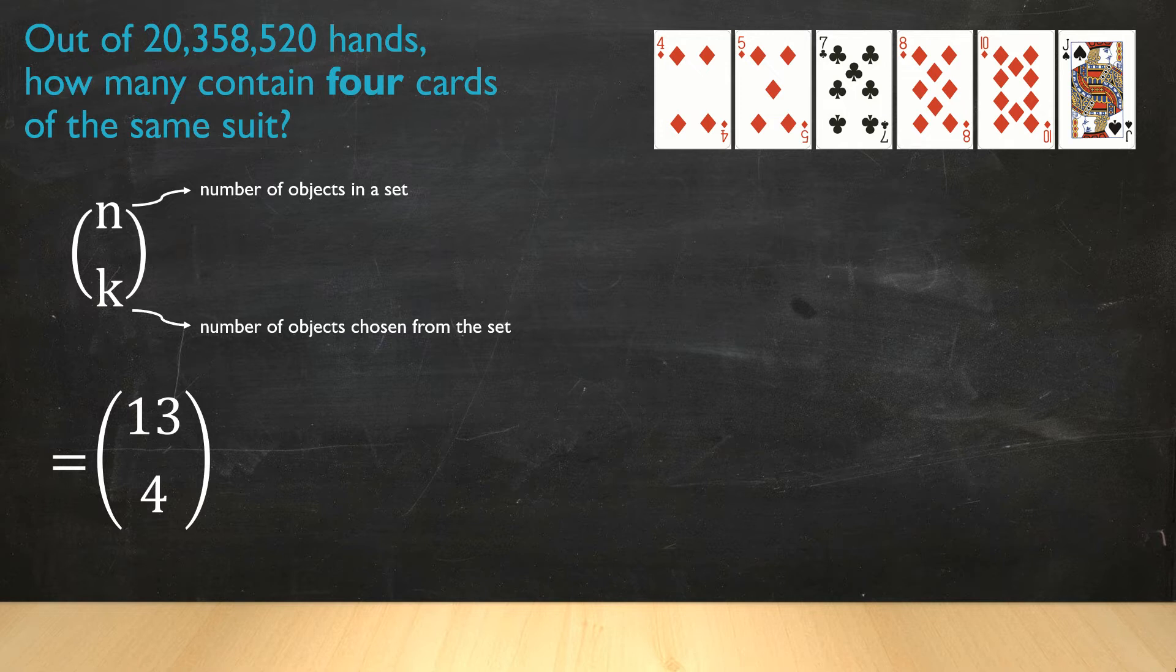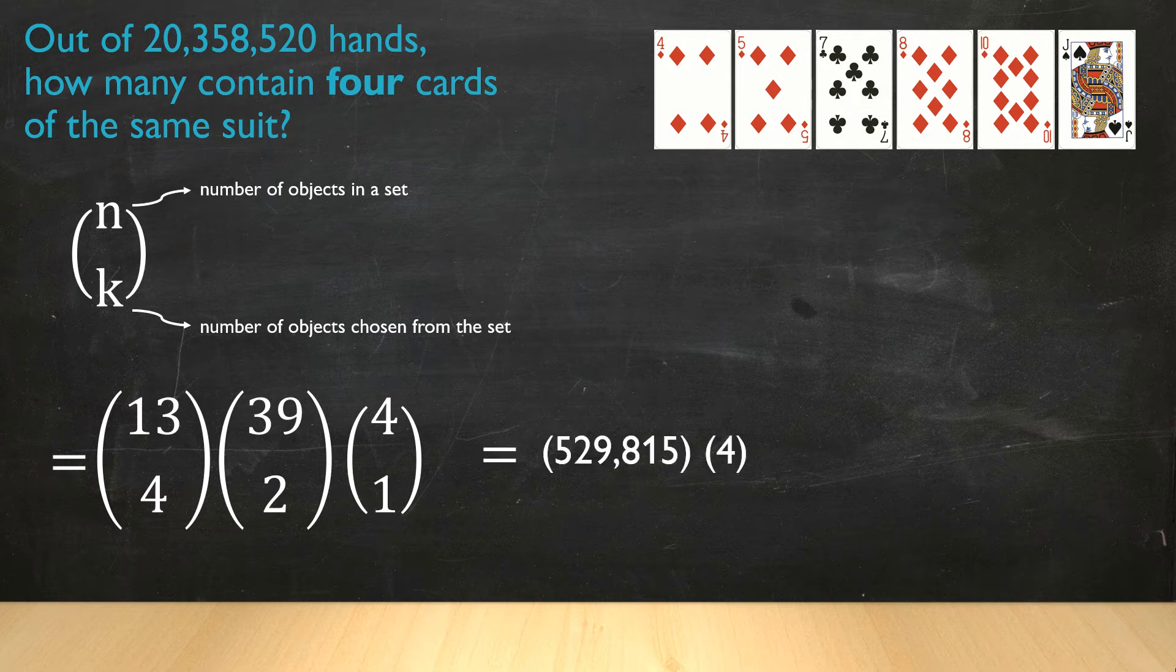But we're not done. We need two more cards to make up our six card hand. And those two cards can come from any of the remaining 39 cards in the deck. So 39 choose two. And last, there are four suits, and we're choosing one of them. So when we put that into our calculator, we get 529,815 times four, and that equals 2,119,260. That's how many six card hands contain four cards of the same suit.